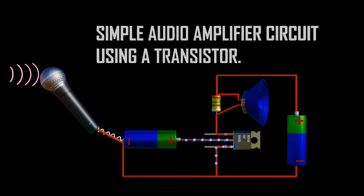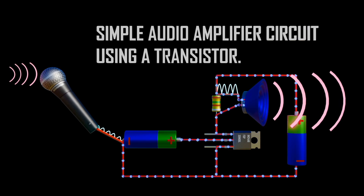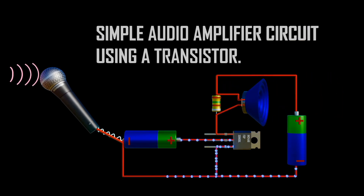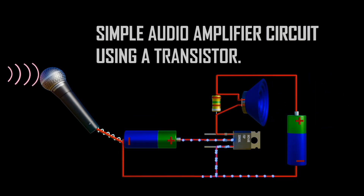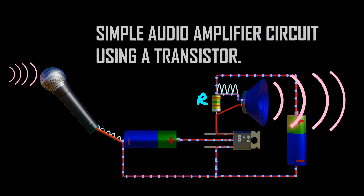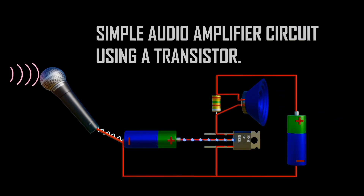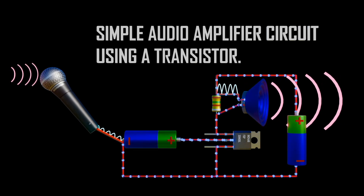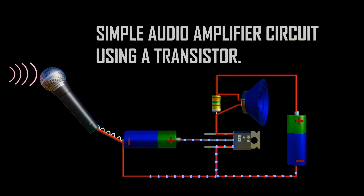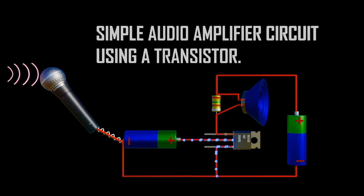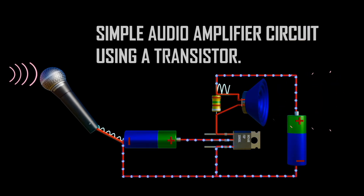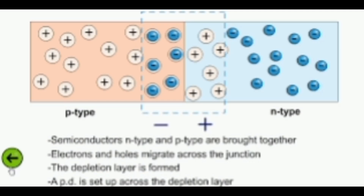Transistor as an amplifier: due to small changes in base current, the collector current mimics the input with greater amplitude. Battery V_BB is connected to the base to keep the emitter-base junction forward biased regardless of input AC polarity. Output is taken across load R. During the positive half cycle, the AC input keeps the emitter-base junction more forward biased, causing more carriers to be emitted, resulting in a larger current through the load. During the negative half cycle, less forward bias means fewer carriers, so collector current decreases, resulting in a decreased output.